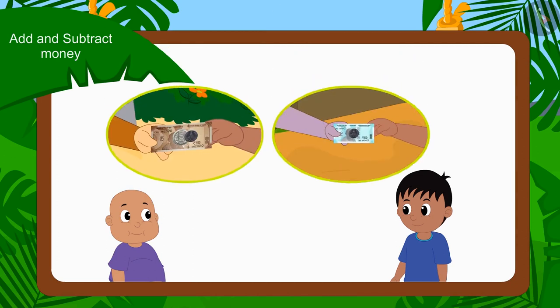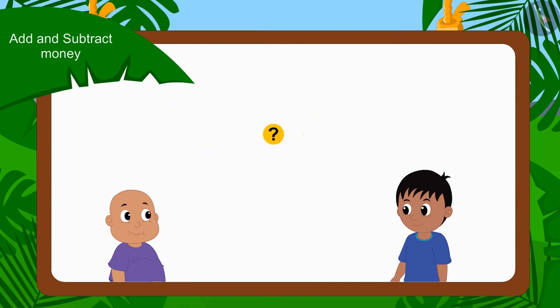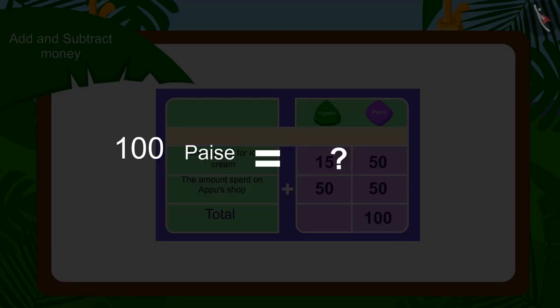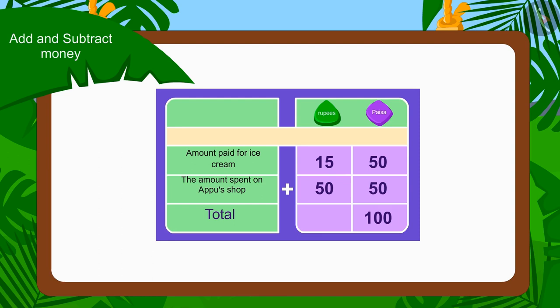First, we will find out the total amount spent by both of them. Children, can you add these two amounts and tell how much money Raju and Bablu have spent together? We will add the numbers written in paise. By adding 50 and 50, we get 100. Can we write 100 paise here? No. Kids, do you remember how much 100 paise is worth? Right — 1 rupee. Therefore, we will write 100 paise as a carryover in the rupees column.